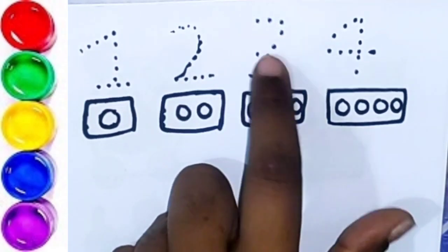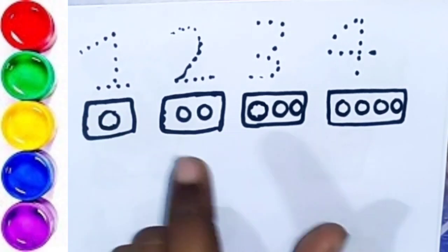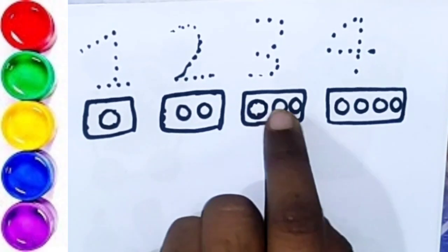1, 2, 3, 4. One circle, two circle, three circle, four circle.